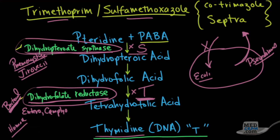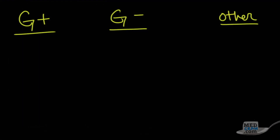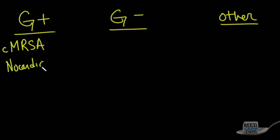To review: trimethoprim sulfamethoxazole is a combination antibiotic that works in the metabolism of folic acid and the creation of thymidine. It works at two different positions and bacteria can have resistant mechanisms against it. In terms of gram positives, one condition we see this used for is MRSA, especially community-acquired MRSA. On a sensitivity profile it is listed as sensitive to Septra, though it's not always the best choice as monotherapy. Another gram positive — or weakly gram positive — is Nocardia; if you see Nocardia, think of Septra or trimethoprim sulfamethoxazole.